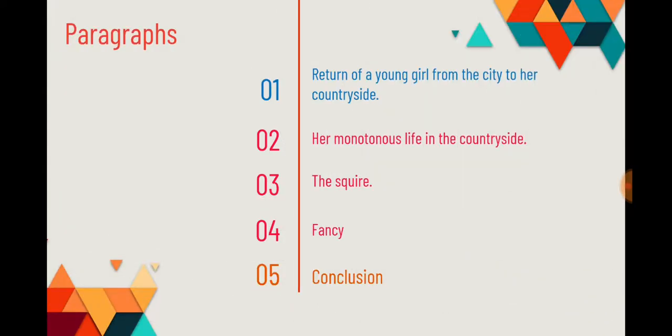In this poem we have five paragraphs or five divisions. The first one is the introduction — that is the return of a young girl from the city to her countryside. Then we have the second, third, and fourth paragraphs which talk about the main situation. The second paragraph talks about her monotonous life in the countryside, the third is dedicated to the squire, the fourth presents her fancies and imaginations, and the fifth part is the conclusion.